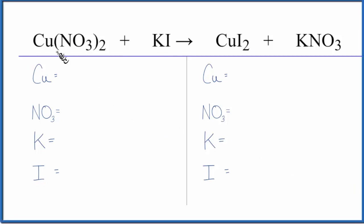In this video we'll balance the equation for Cu(NO3)2 plus KI. This is copper 2 nitrate plus potassium iodide. It's a double replacement reaction where the potassium and the copper switch places.